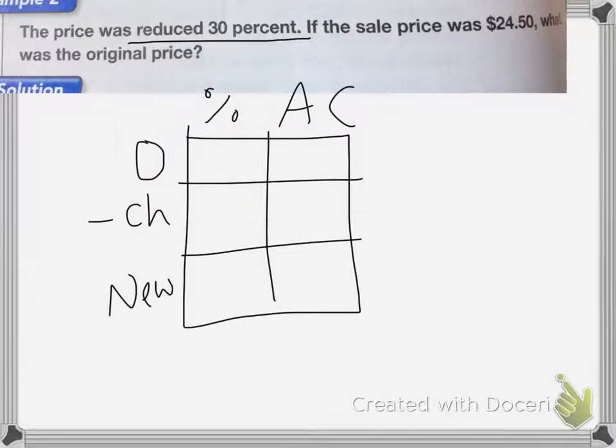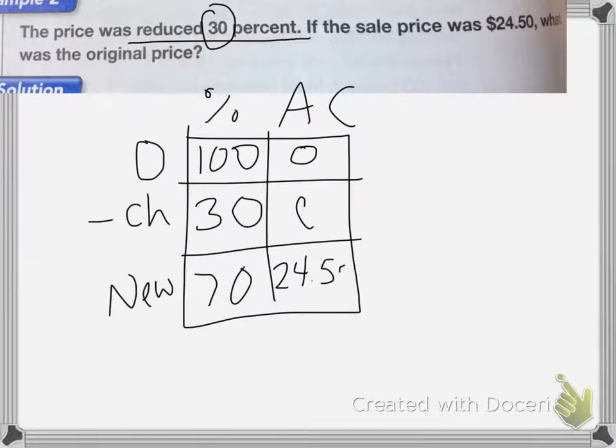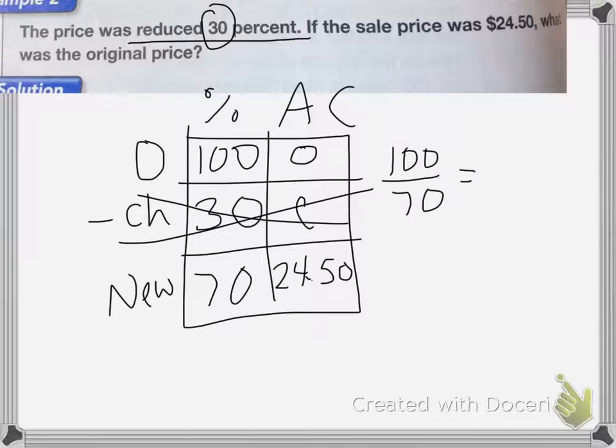So the original percent is going to be 100%. We're taking off 30%. So my new percent is going to be 70% because 100 minus 30 is 70. I don't know what the original price was, and I don't know what the change is, but I do know that the new price is $24.50. Now I can do my proportion. We're looking for the original price, so I don't need to find out the change.